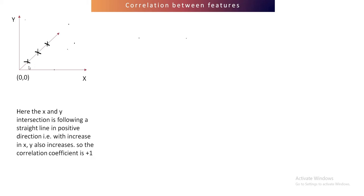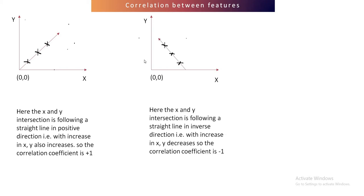Let's understand different scenarios of correlation. In the first scenario, we have x and y where all the intersection points are lying on a straight line. Here the correlation between x and y is plus one, because as the value of x increases, the value of y also increases.